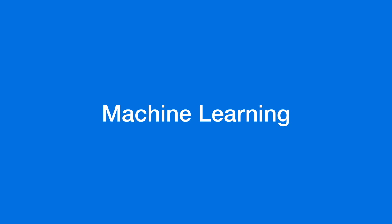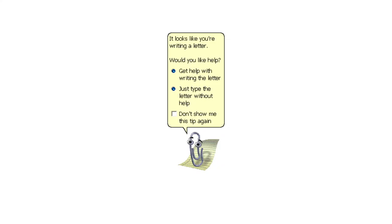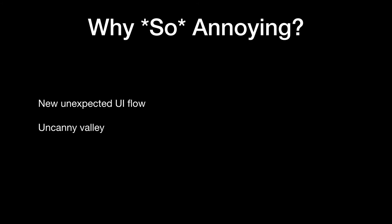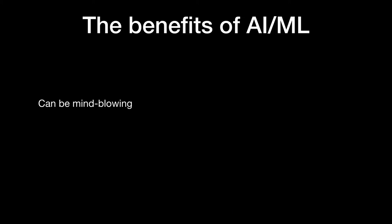In 1997, two significant things happened: Steve Jobs came back to Apple, Apple stock hit an all-time low — and one more significant thing in computing: Clippy. That little character appeared when you were working on a document. Why was Clippy so annoying? He was unexpected — that 'uncanny valley' effect, something that's kind of human but not really. He added work by distracting you and asking you to do things without doing smart things. He's still in the Office — just in a different department now.